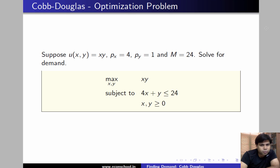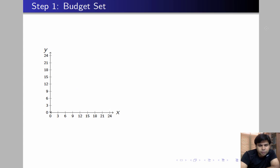We are going to solve this problem in steps. The first step will be to plot the budget constraint. What is the budget line here? The budget line is 4x plus y equal to 24. Let's plot it.